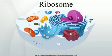When a ribosome finishes reading an mRNA molecule, these two subunits split apart. Ribosomes are ribozymes, because the catalytic peptidyl-transferase activity that links amino acids together is performed by the ribosomal RNA.